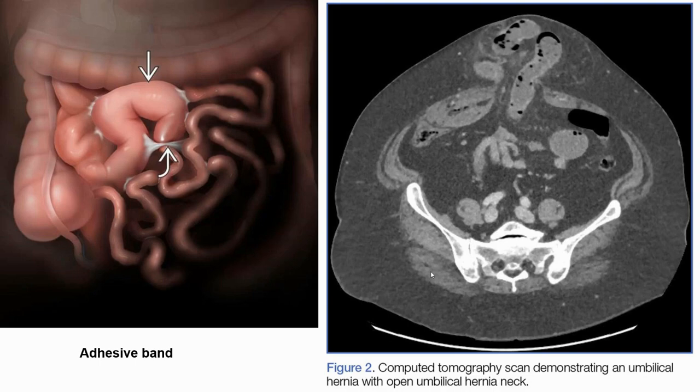The left image shows an adhesive band, with the curved arrow indicating where the obstruction occurs, and the white arrow pointing to the dilated small bowel before the obstruction site. The right image shows a CT scan of the abdomen, where the entry near the umbilicus is visible.